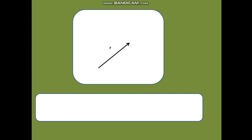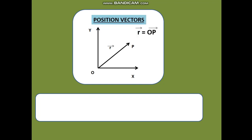Now let us see what a position vector is. We have R as the vector OP, and we place it on a coordinate axis with X and Y axes. This gives the position of that particular vector. So R vector equals OP vector, and this is known as the position vector.